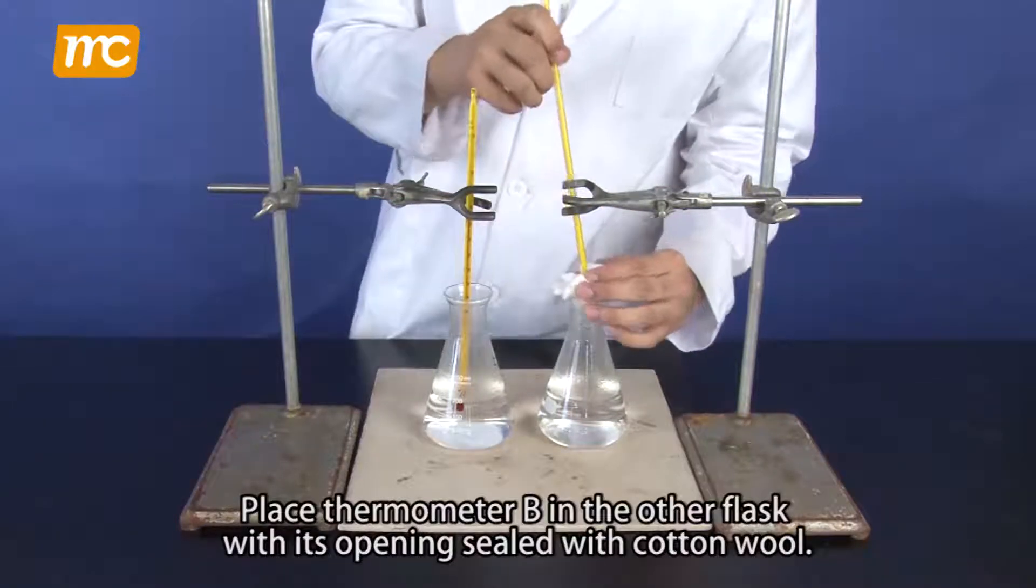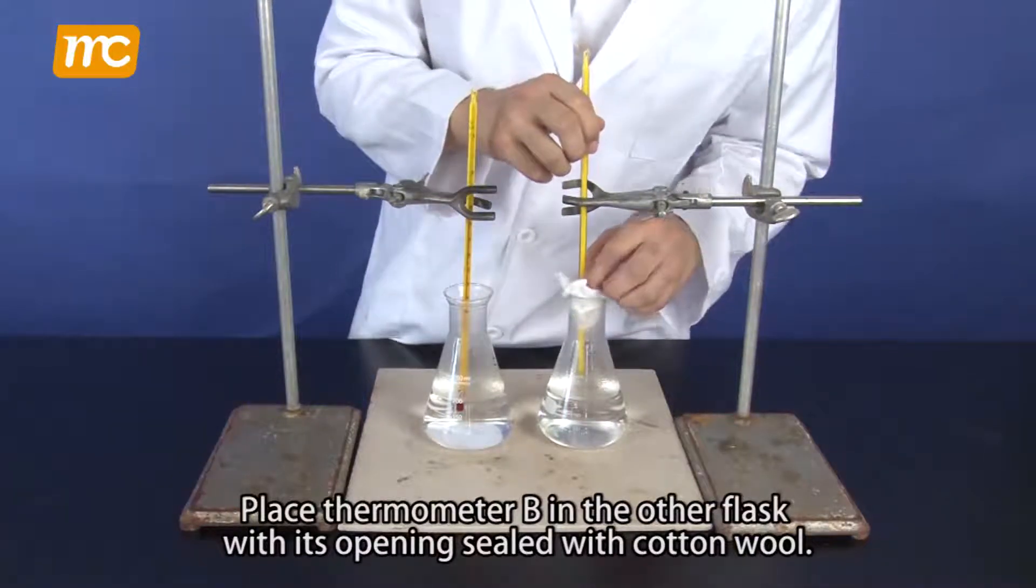Place thermometer B in the other flask, with its opening sealed with cotton wool.